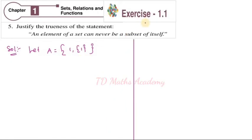Exercise 1.1, question number 5: justify the trueness of the statement. The meaning of trueness is we have to tell whether this statement is true or not true. We have to justify by giving one example. The statement is: an element of a set can never be a subset of itself.